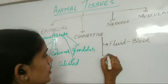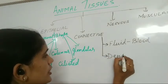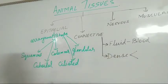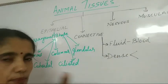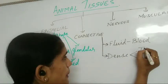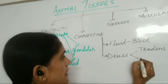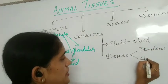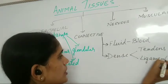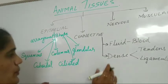Next is dense connective tissue. In dense connective tissue there are two types: tendons and ligaments. These are the two types of dense connective tissue.